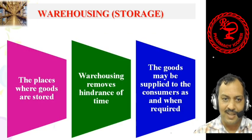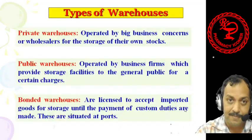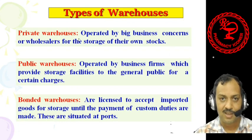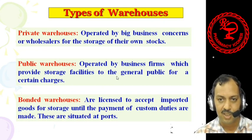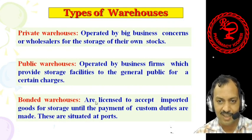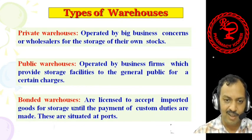Warehousing refers to places where goods are stored; it removes the hindrance of time, allowing goods to be supplied to the consumer as and when required. There are various types of warehouses: private warehouses, public warehouses, and bonded warehouses. Public warehouses are operated by business firms that provide storage facilities to the general public for certain charges. Private warehouses are run by private organizations — big business concerns or wholesalers for their own stocks. Bonded warehouses are licensed warehouses that accept imported goods for storage until customs duties are paid; they are generally situated at ports.